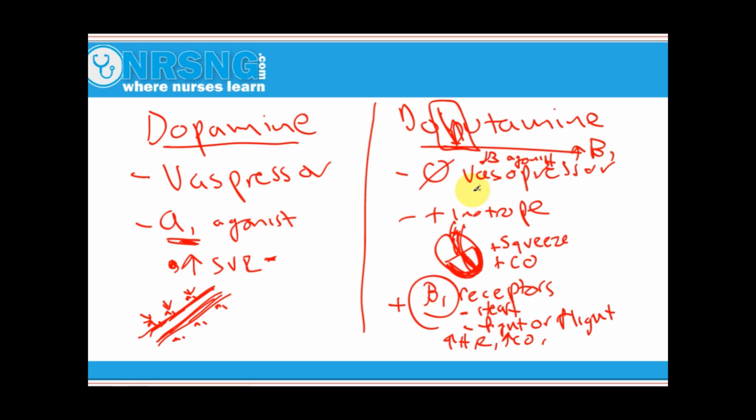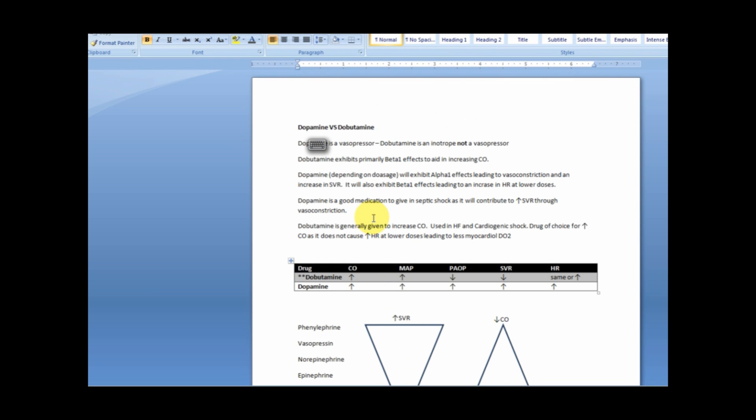So there's a quick overview for you. Let's go over to this chart that I have here, and we'll talk about some of these things on this chart. Dopamine is a vasopressor. Dobutamine is not, it's an inotrope, not a vasopressor.